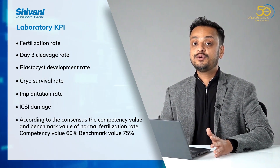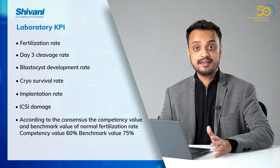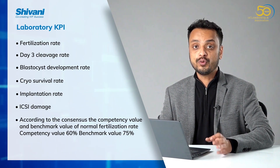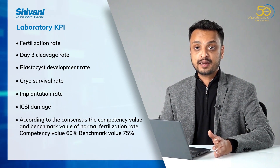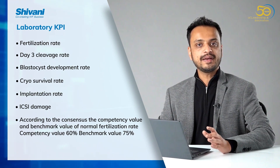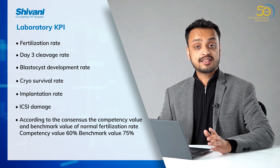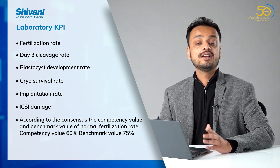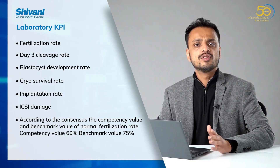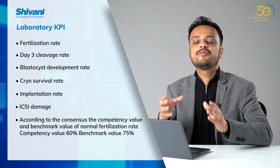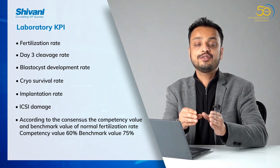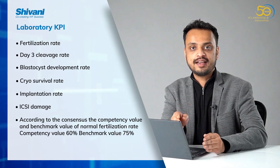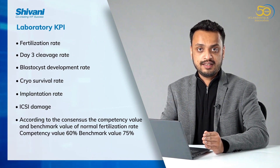You can decide those rates by your own standards — standardization of these rates should be done in your own lab — but according to the Vienna consensus, your competency rate should be around 60%, and the benchmark, which is the higher grade, is around 75%. So with a minimum of 10 oocytes, you should have at least 6 to 7 oocytes fertilized by IVF or ICSI.